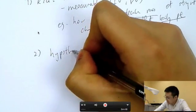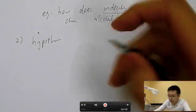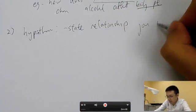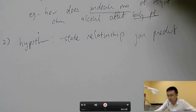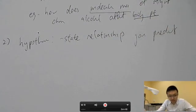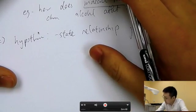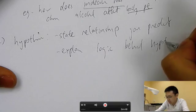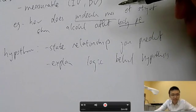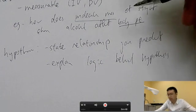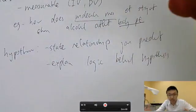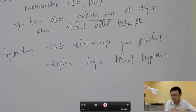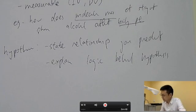Second is your hypothesis. For this causal relationship, you need to state the relationship — you don't need to state the magnitude, but you should state the relationship you predict. For example, for 'How does molecular mass of straight-chain alcohol affect boiling point?' you can say: as molecular mass increases, boiling point is expected to increase. It's very important to explain the logic behind the hypothesis. In this case, greater London dispersion forces mean stronger intermolecular forces attracting molecules together, so more heat is required to separate them — hence boiling point increases.